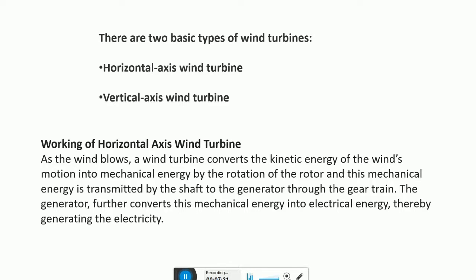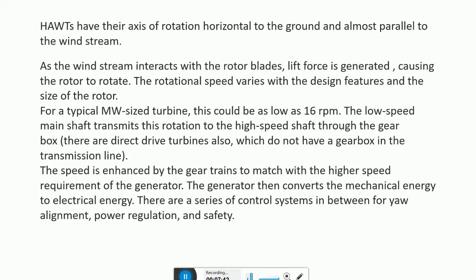The generator further converts this mechanical energy into electrical energy, generating electricity. Horizontal axis windmills have their axis of rotation horizontal to the ground and almost parallel to the wind stream. As the wind stream interacts with the rotor blades, lift force is generated and the rotor rotates. The rotational speed varies with design features and the size of the rotor. For a typical megawatt-size turbine, this would be as low as 16 RPM.